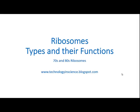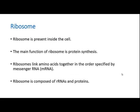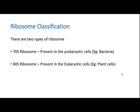Hello and welcome to the presentation: Ribosomes — Types and Their Functions. We will look into the details of 70S and 80S ribosomes. A ribosome is a cellular organelle present inside the cell. The main function of the ribosome is protein synthesis. Ribosomes link amino acids together in the order specified by the messenger RNA during protein synthesis. Ribosomes are composed of rRNA and proteins.